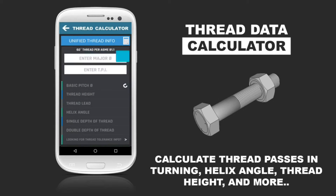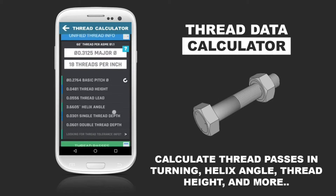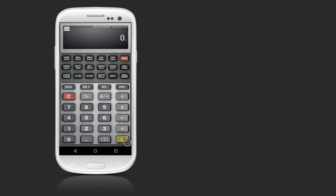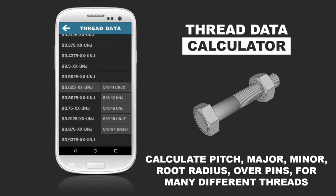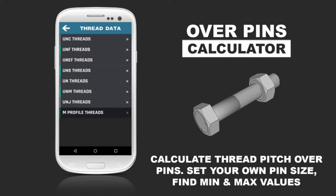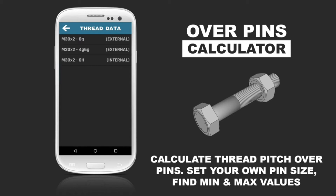It even includes UN, UNF, UNC, UNEF, UNS, UNM, UNJ, NPT, ACME, STI, and BSPP thread data, as well as M profile thread data up to 600mm.